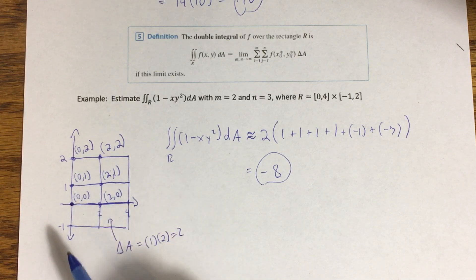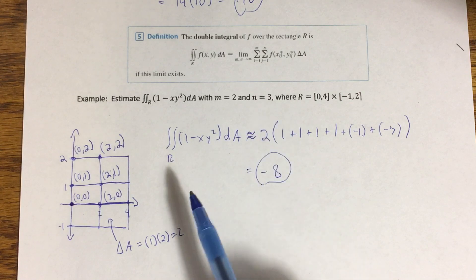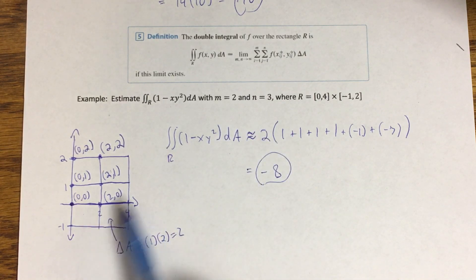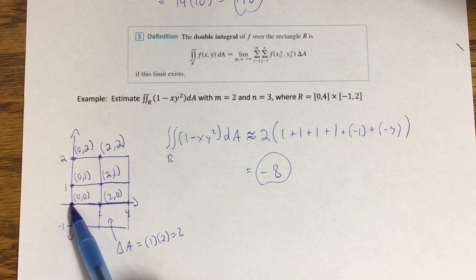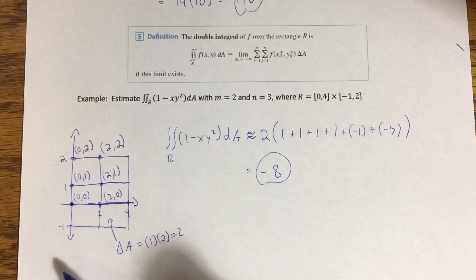Anytime you're doing an integration problem, even whether it's an estimation or if we're trying to get an exact answer, usually you're starting with a sketch. So here I'm looking at the xy-plane, and notice I do all this ahead of time. So here's the interval from zero to four on the x-axis and the interval from negative one to two on the y-axis. And then you'll notice we say m equals two and n equals three for this estimation.